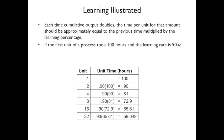For example: the first unit took 100 hours. The next two units took 90 hours each, the next four took 81 hours each, and the next eight took 72 hours each. The number of units doubles each time, and the time per unit drops by about 10% — illustrating the learning curve in action.